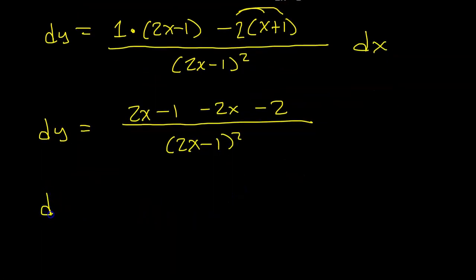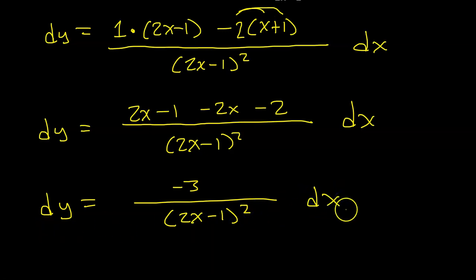So that'll give us dy equals, hmm, 2x minus 2x, those cancel each other out. So we're going to end up with, whoops, I almost forgot the dx. So we're going to end up with negative 3 in the numerator. So we have negative 3 over 2x minus 1 squared dx. And that's it, guys. I think you get it.